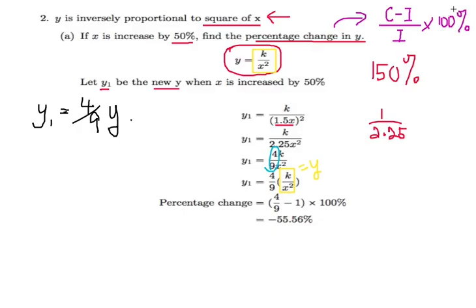So take note that the current is 4 over 9, minus initial divided by 1, and this will give you minus 55.56%.